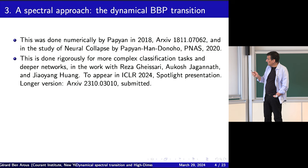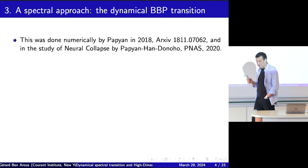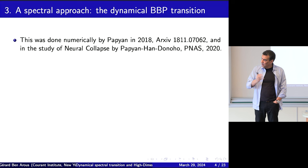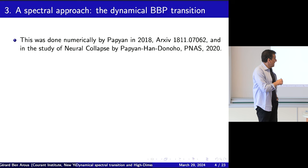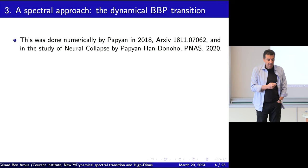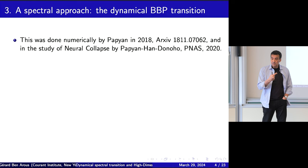Papyan looked at the classification task — the most natural workhorse of classification — specifically classification in K classes for a Gaussian mixture. He did SGD along this thing with the usual network: one hidden layer, two layers. He looked at the spectrum of this big Hessian. He found numerically a structure that was interesting. We will look at this mathematically — not numerically.